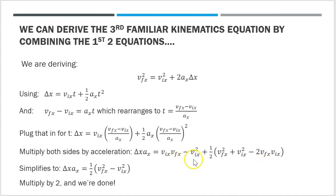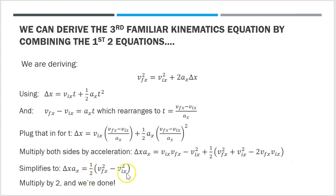So the right-hand side becomes one-half times (vfx squared minus vix squared), and the left-hand side is still delta x times ax. Multiplying both sides by 2 cancels the one-half, giving 2ax times delta x equals vfx squared minus vix squared. Adding vix squared to both sides: vfx squared equals vix squared plus 2ax times delta x. That's the last kinematics equation you might remember from your 1000-level physics class.